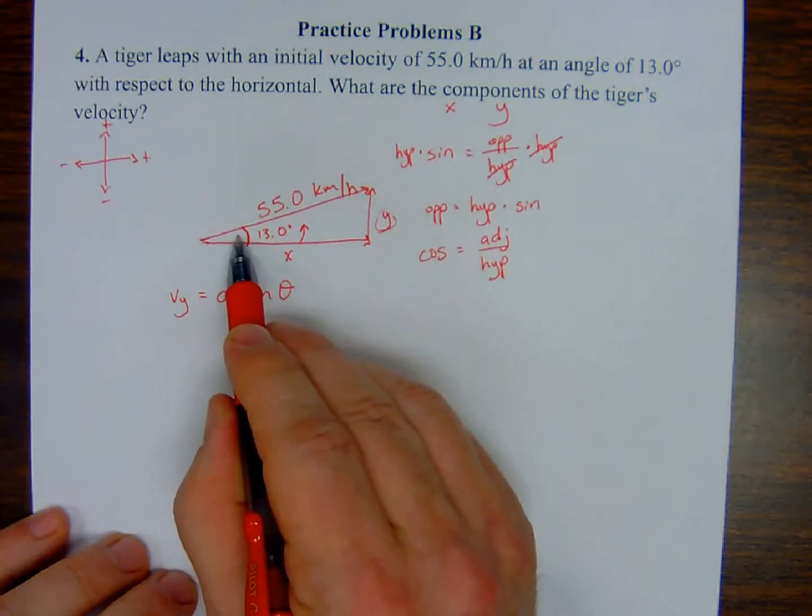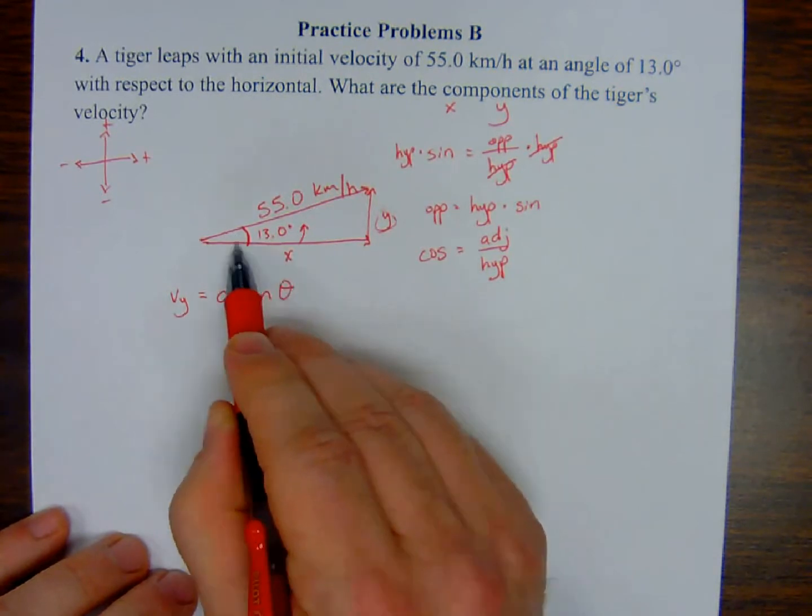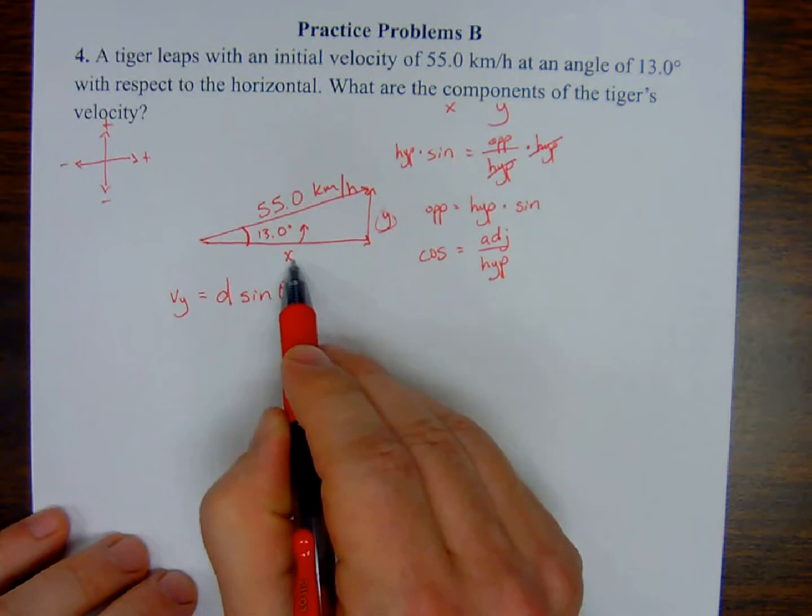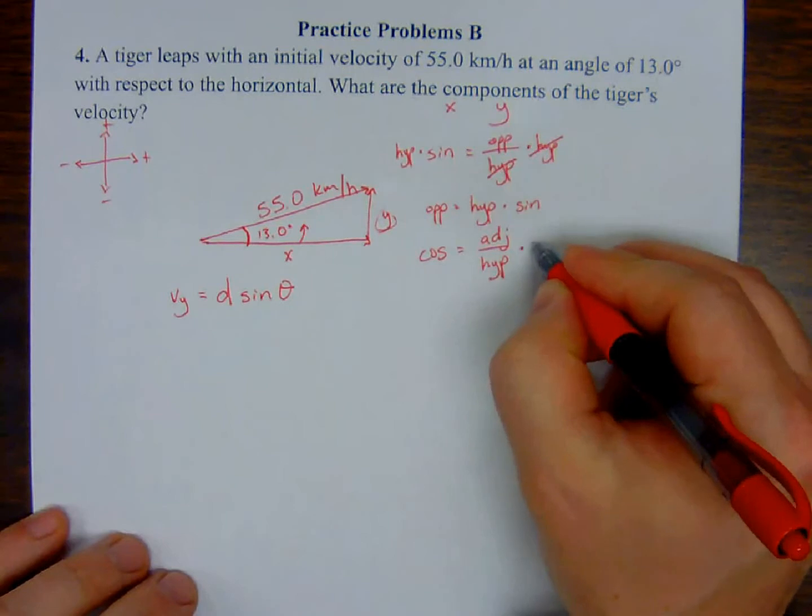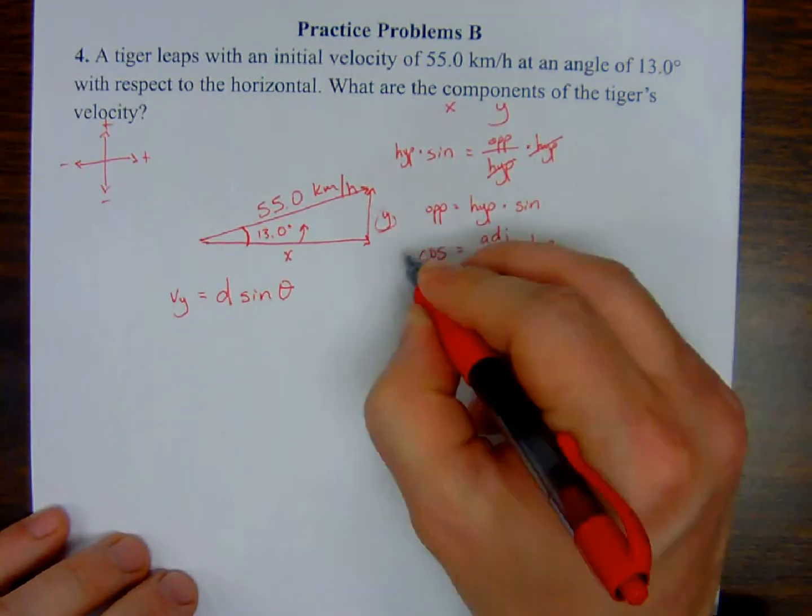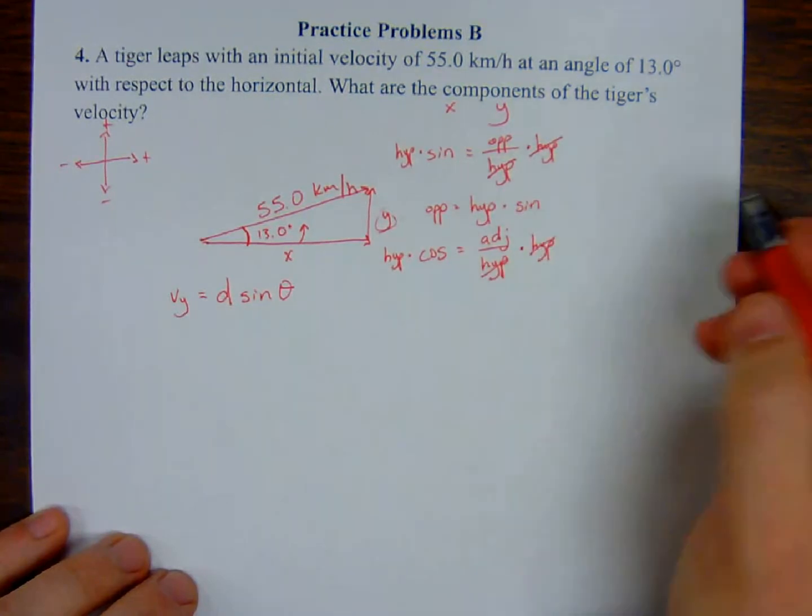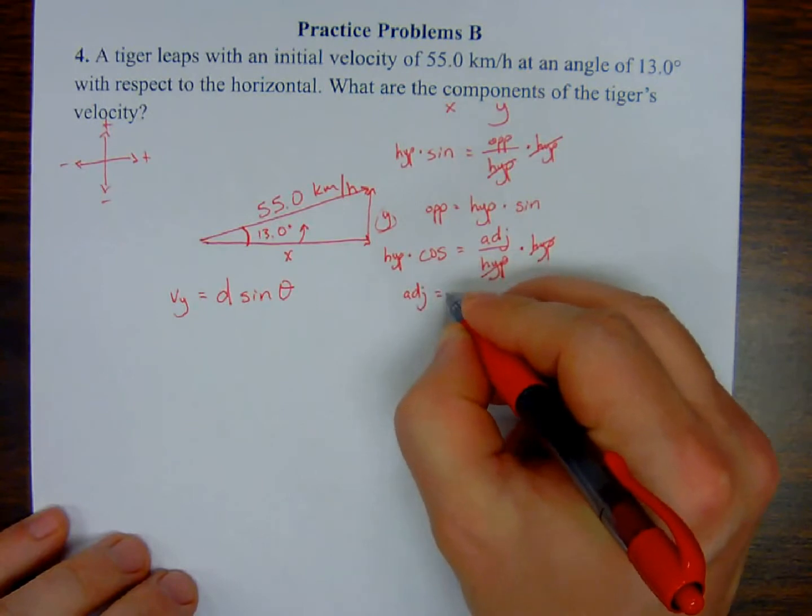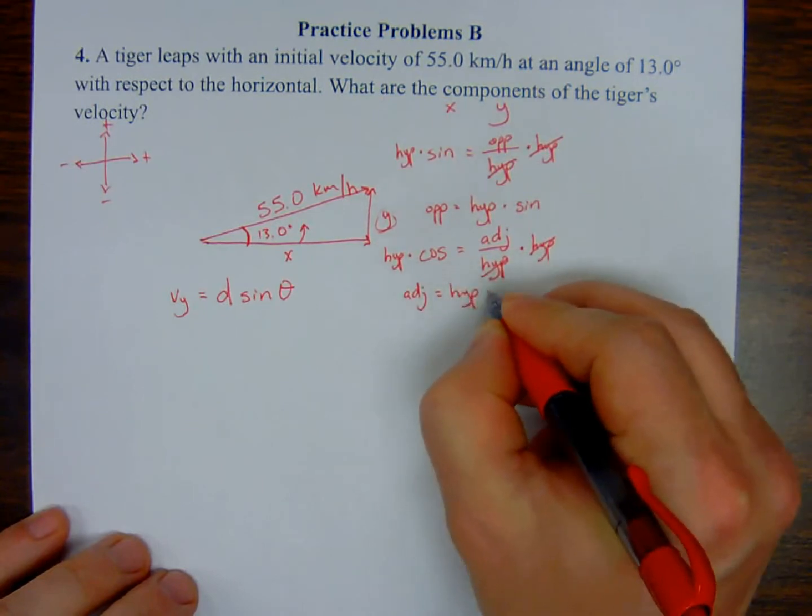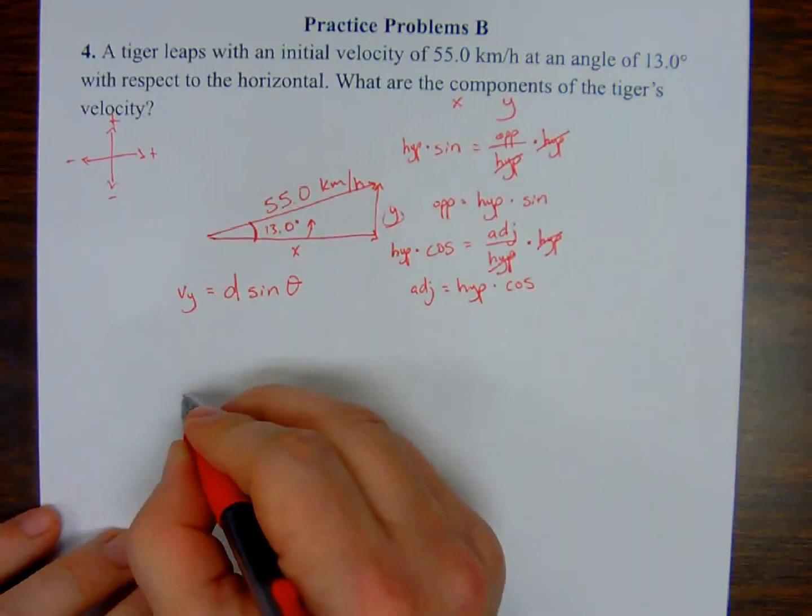In order to get adjacent all by itself on one side of the equation, I'm going to multiply both sides by hypotenuse. And so that leaves me with adjacent being equal to hypotenuse multiplied by cosine. And so that will give me the way to solve for my velocity in the x component, which is hypotenuse, the resultant, multiplied by the cosine of the angle.